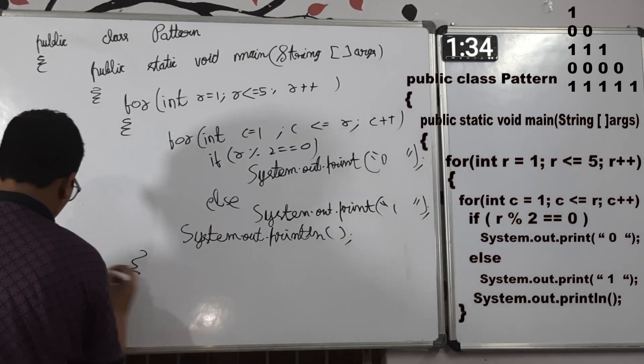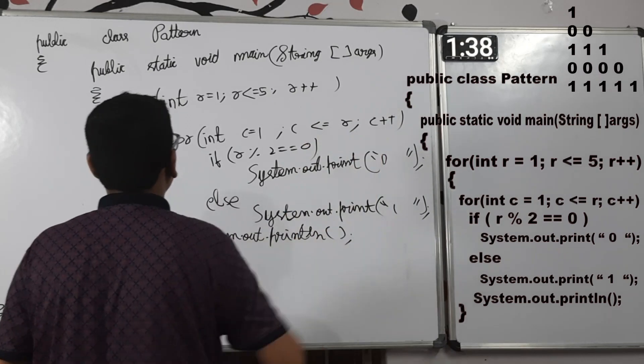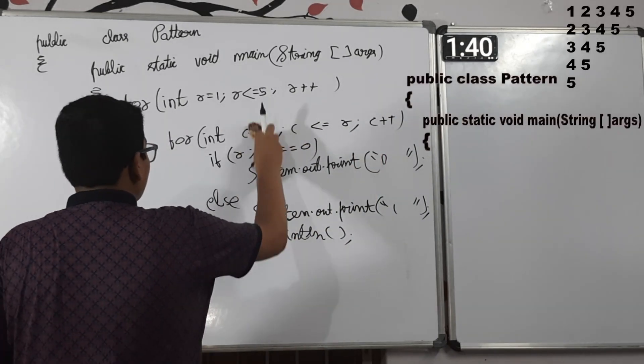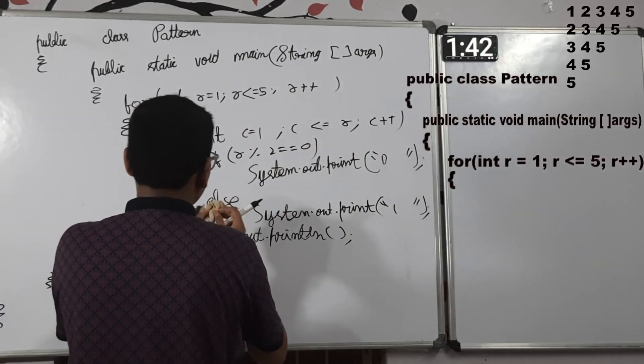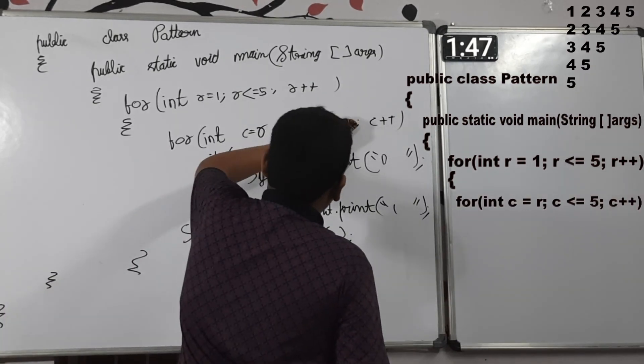Now, closing for loop, closing for main method and closing for class. Now, we will write the second one. c is equal to r, c less than is equal to 5.